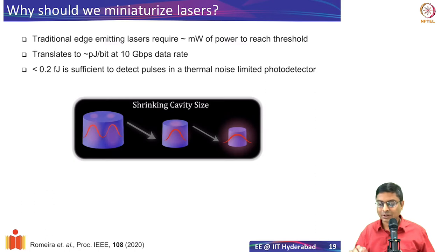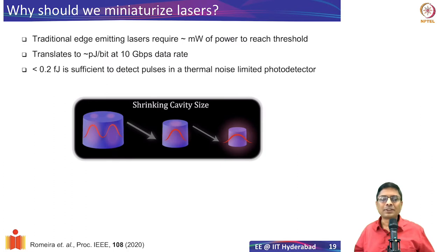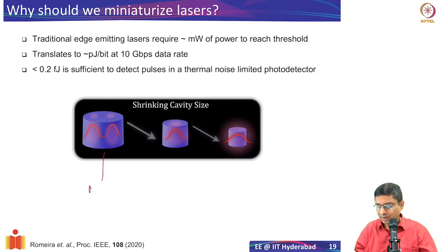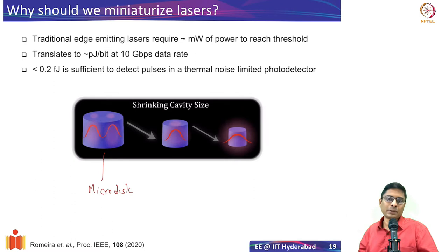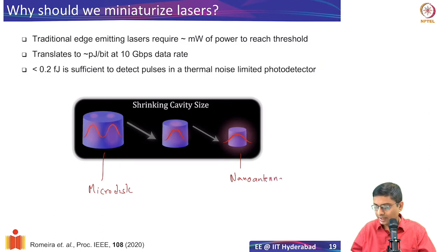Can we actually confine electromagnetic energy in a nano-disk? We have seen from Mie resonances that a semiconductor disk itself can confine energy with a reasonably large Q-factor. For a micro-disk it has been shown you can have good confinement and lasing. But the moment you try to go to nanoscale — for example semiconductor nano-antennas — there is a problem: the fundamental diffraction limit of light.